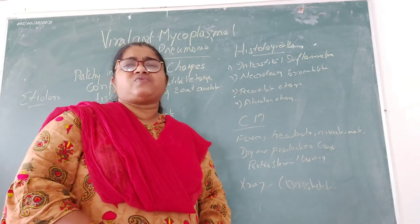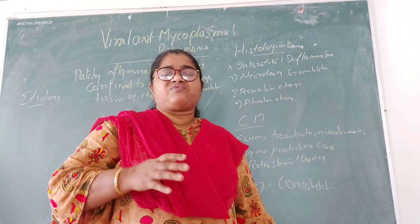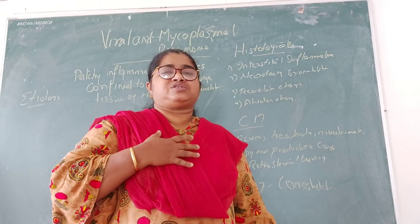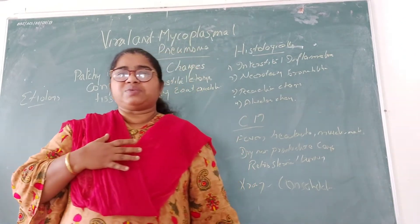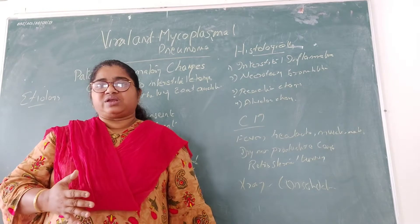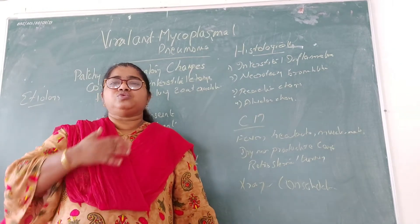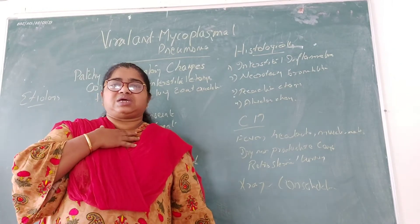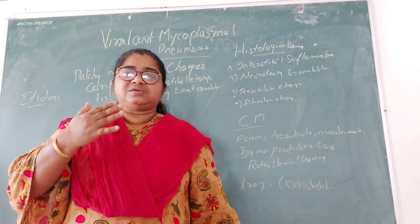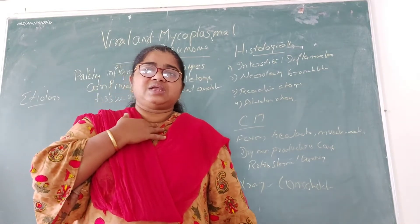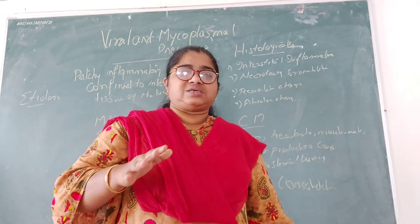This viral pneumonia normally remains confined to the upper respiratory tract. The upper respiratory tract starts from the nasopharynx — it goes from the nasopharynx through the pharynx and larynx up to the trachea only.